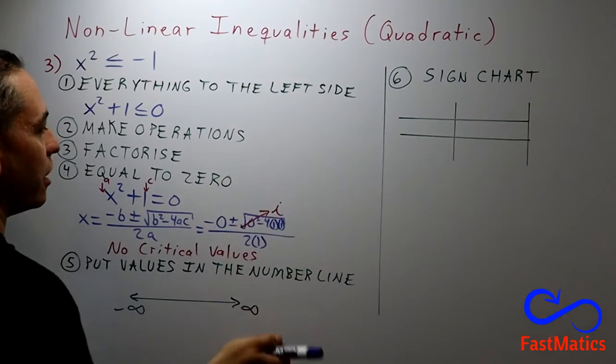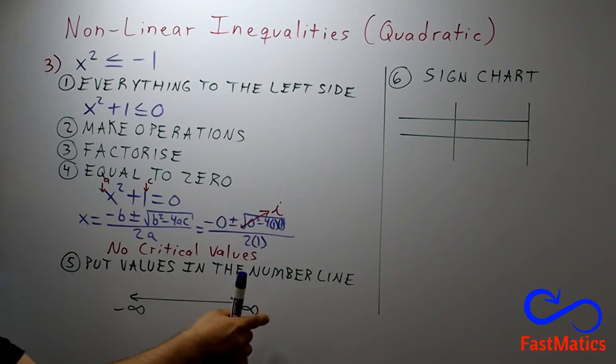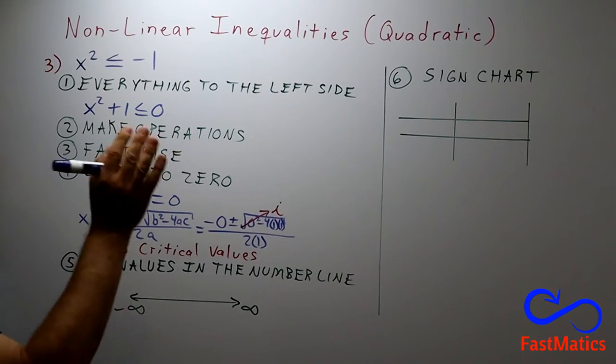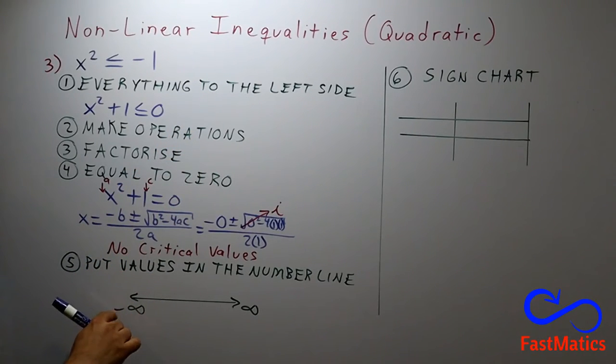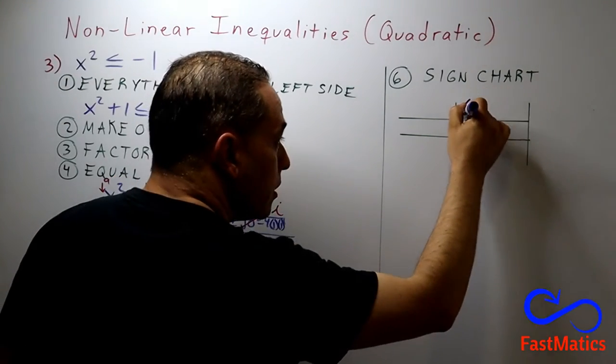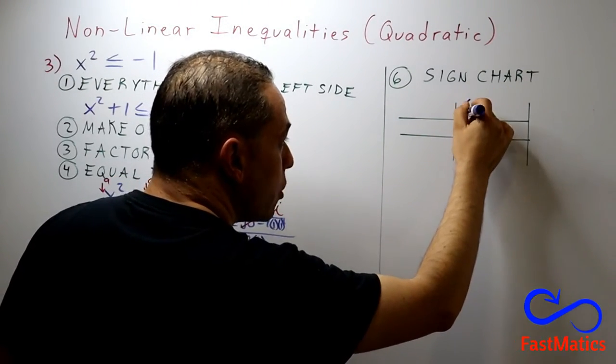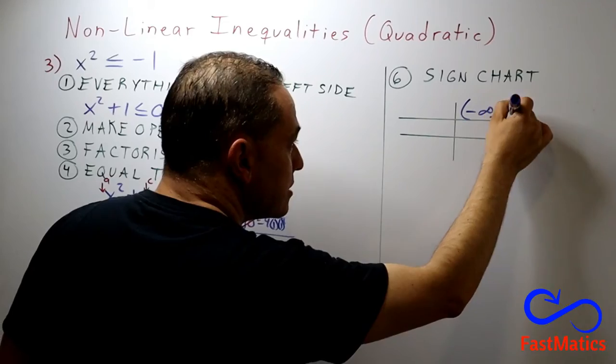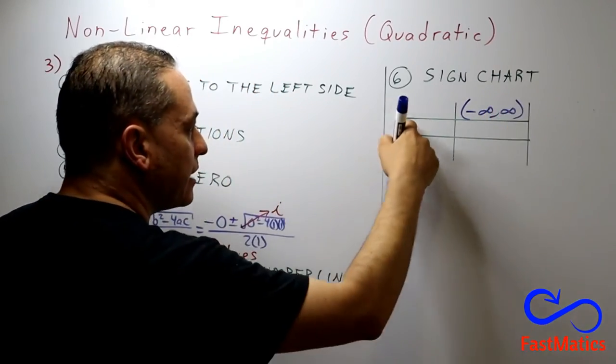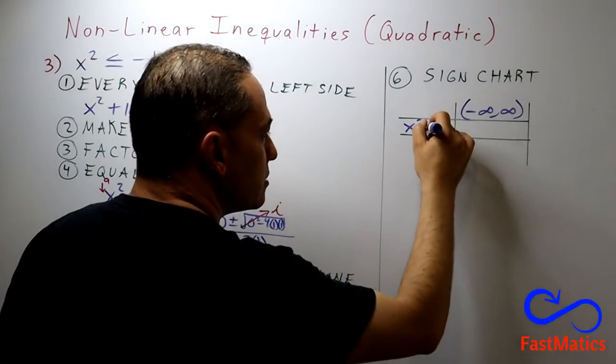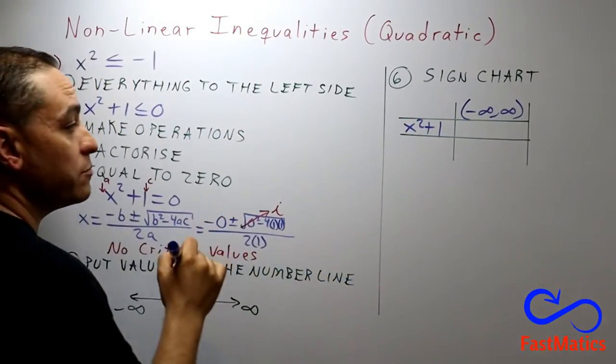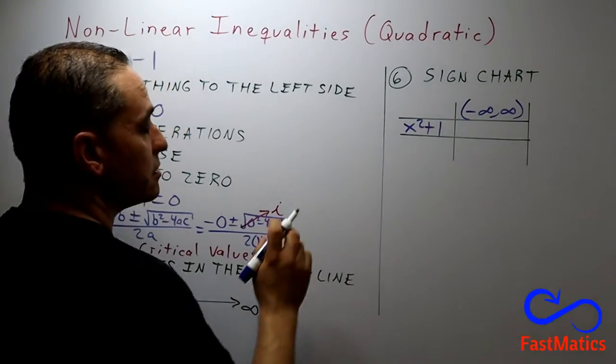Sign chart. Remember, you take the values that are on the number line and you put those values there. But, here, we have from negative infinite to positive infinite. So, you are going to write only that.